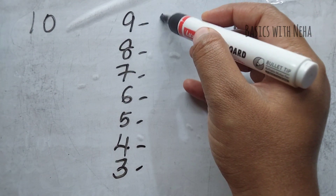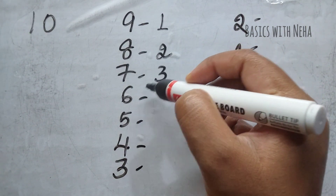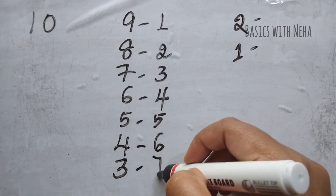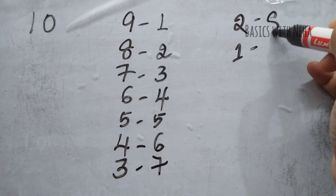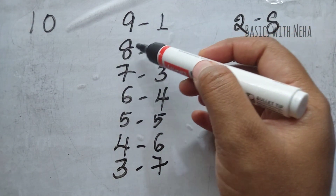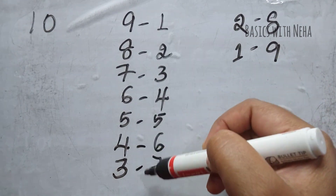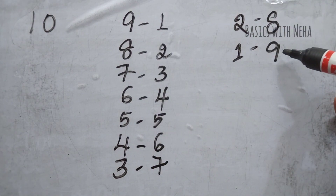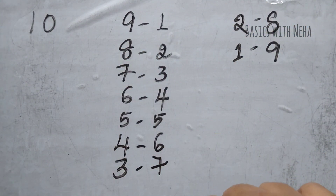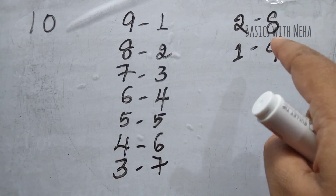Big friends are the numbers that when added together give 10 — that is the friend of a given number. So 9 plus 1 is 10, 8 plus 2 is 10, 7 plus 3 is 10, 6 plus 4 is 10, likewise 1 plus 9 is 10. We should know the big friends of all the numbers — this makes it easy to learn the formulas.